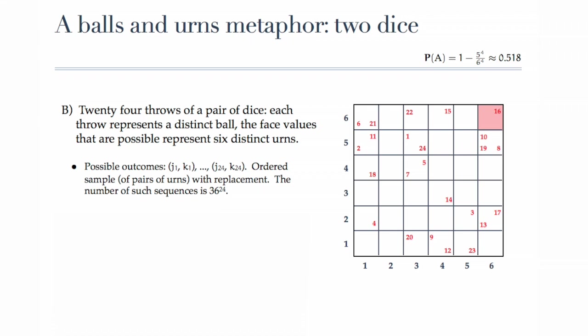This corresponds to, again, a sampling with replacement scenario. The same urn, the same pair of face values, could recur again and again and again. How many possibilities are there for the experiment as a whole? Well, this is an ordered sample of size twenty-four drawn from a population of size thirty-six, and therefore the total number of outcomes for this experiment is a mind-bogglingly large number, thirty-six to the power twenty-four.